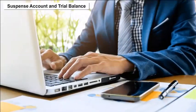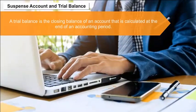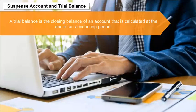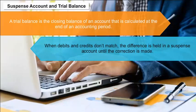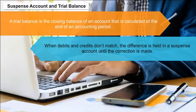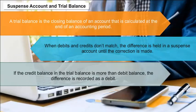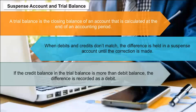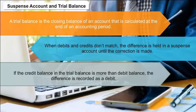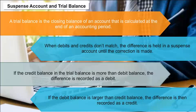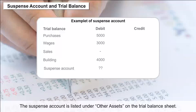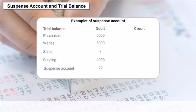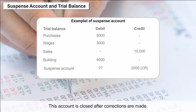Suspense Account and Trial Balance: A trial balance is the closing balance of an account calculated at the end of an accounting period. When debits and credits don't match, the difference is held in a suspense account until the correction is made. If the credit balance is more than the debit balance, the difference is recorded as a debit; if the debit balance is larger, the difference is recorded as a credit. The suspense account is listed under other assets on the trial balance sheet and is closed after corrections are made.